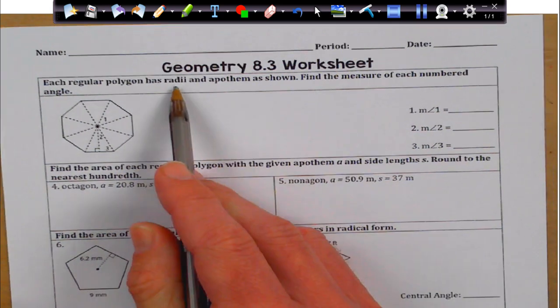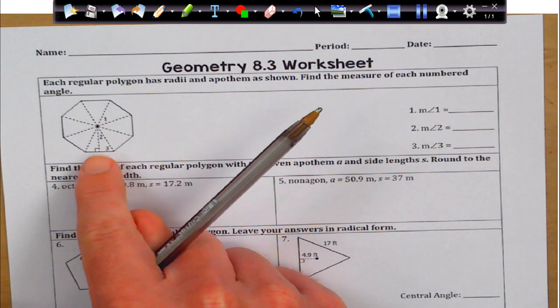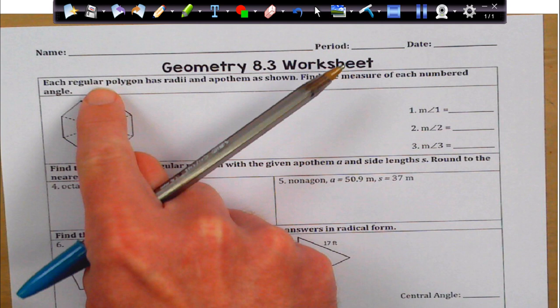Each regular polygon has a radii and apothem, as shown. Find the measure of each numbered angle. First, we're going to figure out how many sides this is. 1, 2, 3, 4, 5, 6, 7, 8 sides.